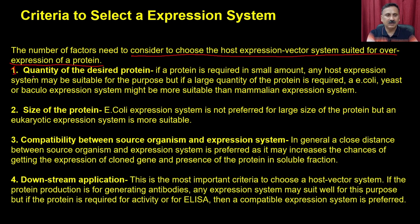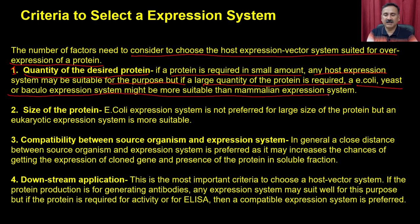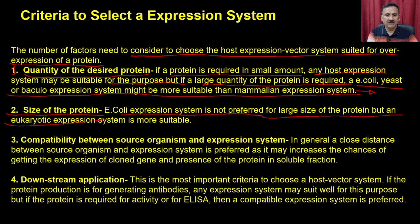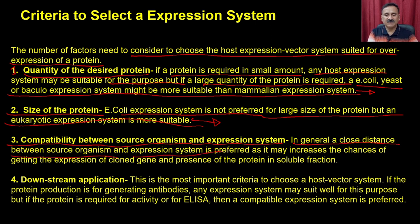A number of factors need to be considered to choose the host expression system suitable for the over-expression of a protein. The first factor is the quantity of the desired protein. If a small quantity is required, any host expression system can be suitable. If a large quantity is required, E. coli, yeast, or baculovirus expression system might be more suitable than the mammalian system. It also depends on the size of the protein — the E. coli system is not preferred for large proteins. Compatibility between the source organism and the expression system is also important; a close distance between them increases the chances of getting expression in the soluble fraction.